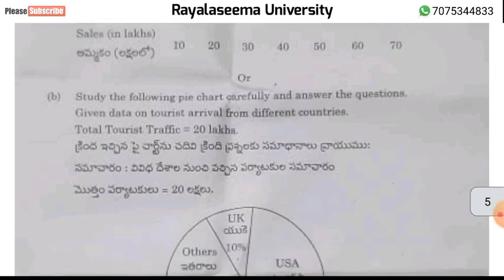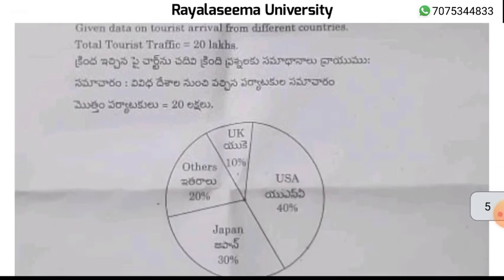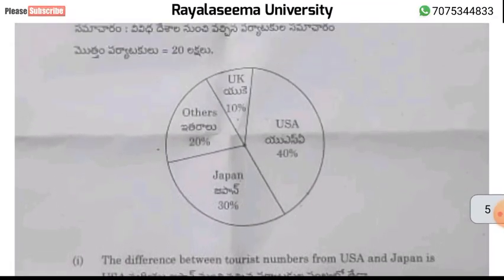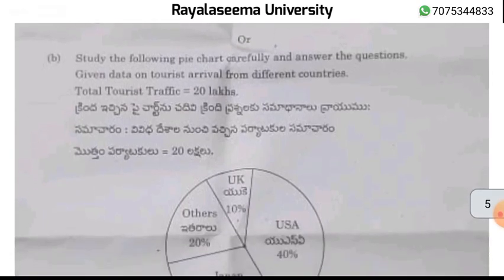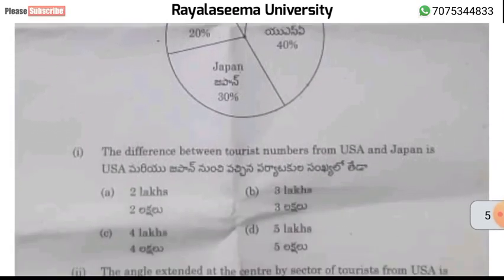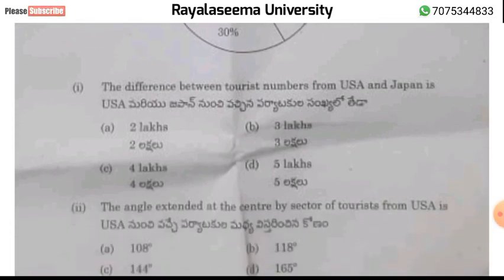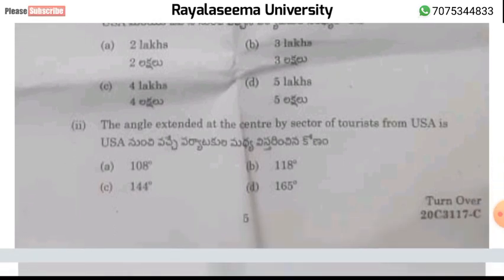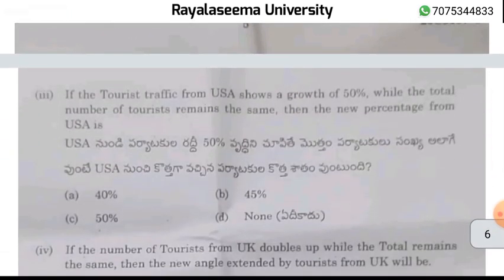Section on pie chart: we will look at the pie chart questions with multiple choices. The first question answer is 2 lakhs. The second question: the same is 144 degrees — option C is the correct answer. The third question answer is 60 percentage — option D is the correct answer.